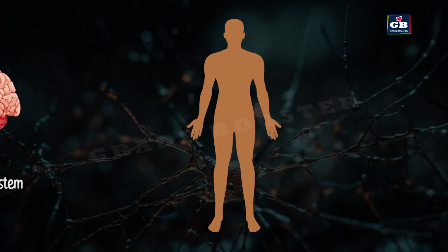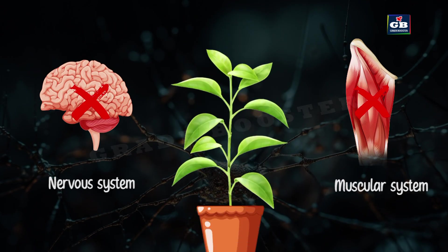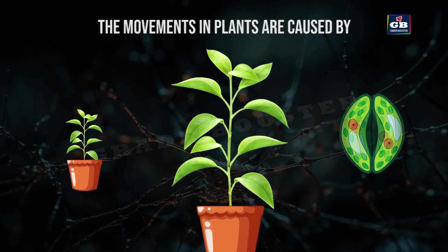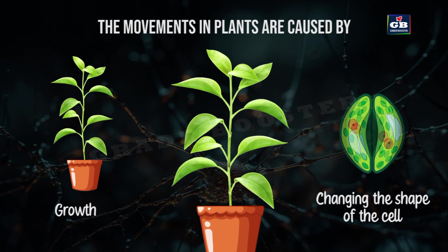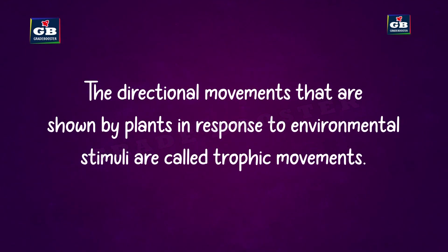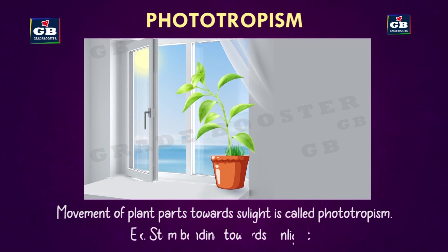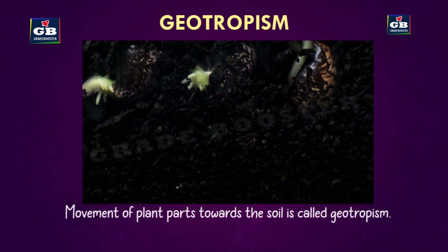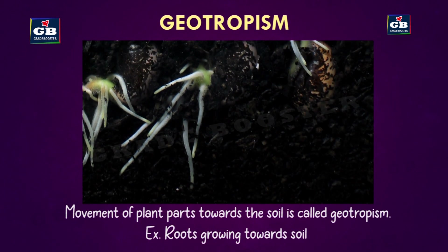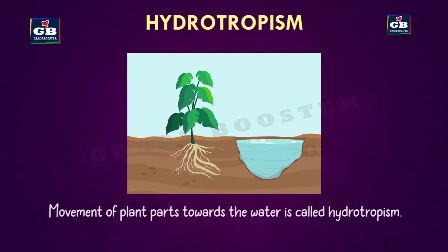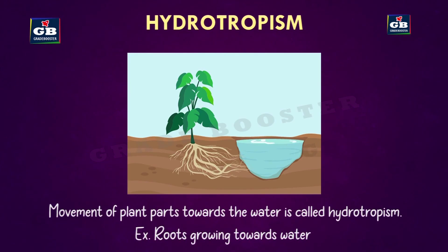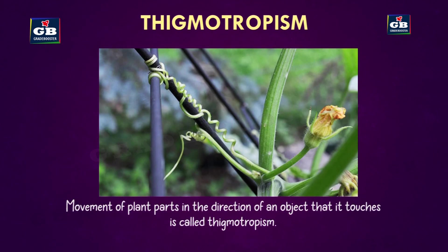How do plants move? Plants do not have a nervous or muscular system like animals. Movements in plants happen due to growth or by changing their cell shape. These growth-based movements are called tropic movements: phototropism is movement towards light (e.g., stem bending towards light); geotropism is movement towards gravity (roots growing towards soil); hydrotropism is movement towards water; thigmotropism responds to touch, such as tendrils coiling around a support.